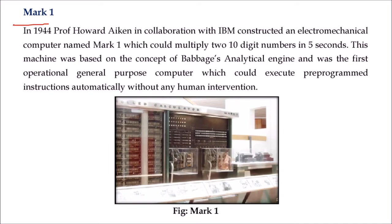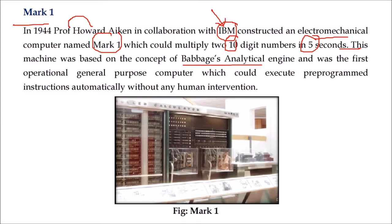Mark 1: In 1944, Professor Howard Aiken collaborated with IBM. IBM constructed an electromechanical computer and named it Mark 1. It could multiply a 10-digit number in 5 seconds and was truly based on Babbage's Analytical Engine. It was the first operational general-purpose computer which could execute certain pre-programmed instructions without any human intervention.